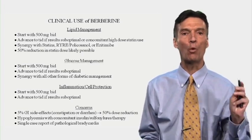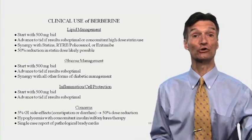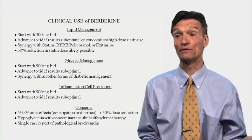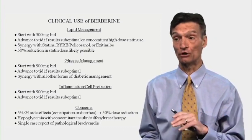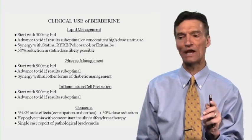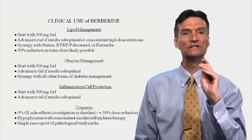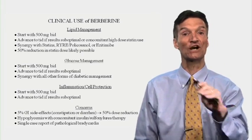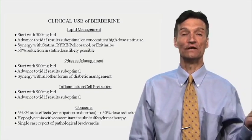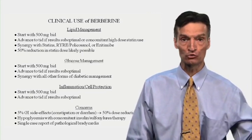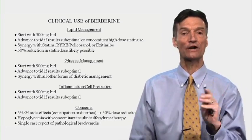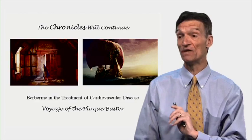For hyperglycemia, we start at 500 milligrams twice a day and increase as tolerated. We need to watch as we may need to cut back on insulin or sulfonylurea therapy. For inflammation, we don't have clear dosing guidelines, but start with 500 milligrams twice a day and advance to a therapeutic target. Concerns: 5% of you will have nuisance GI side effects — gas, cramping, diarrhea or constipation. Don't stop the berberine — cut the dose in half. In every study when you had a side effect, you cut the dose in half. Hypoglycemia: if you're taking insulin and I improve insulin sensitivity with berberine, we may need to back off the dose to avoid hypoglycemia.